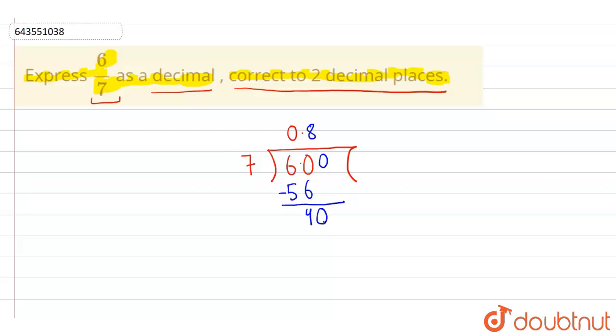Now for 40 as we know the closest number in 7th table is 35. So 7 into 5 times is 35 which means if we subtract 40 minus 35 we will get 5.